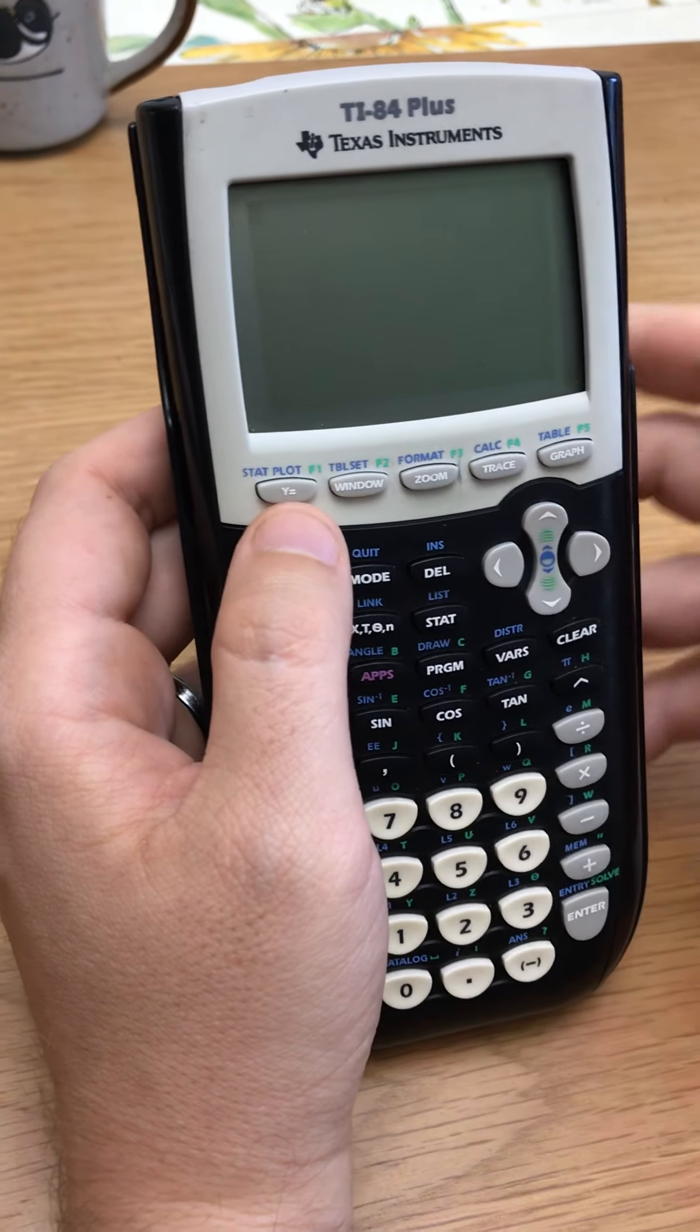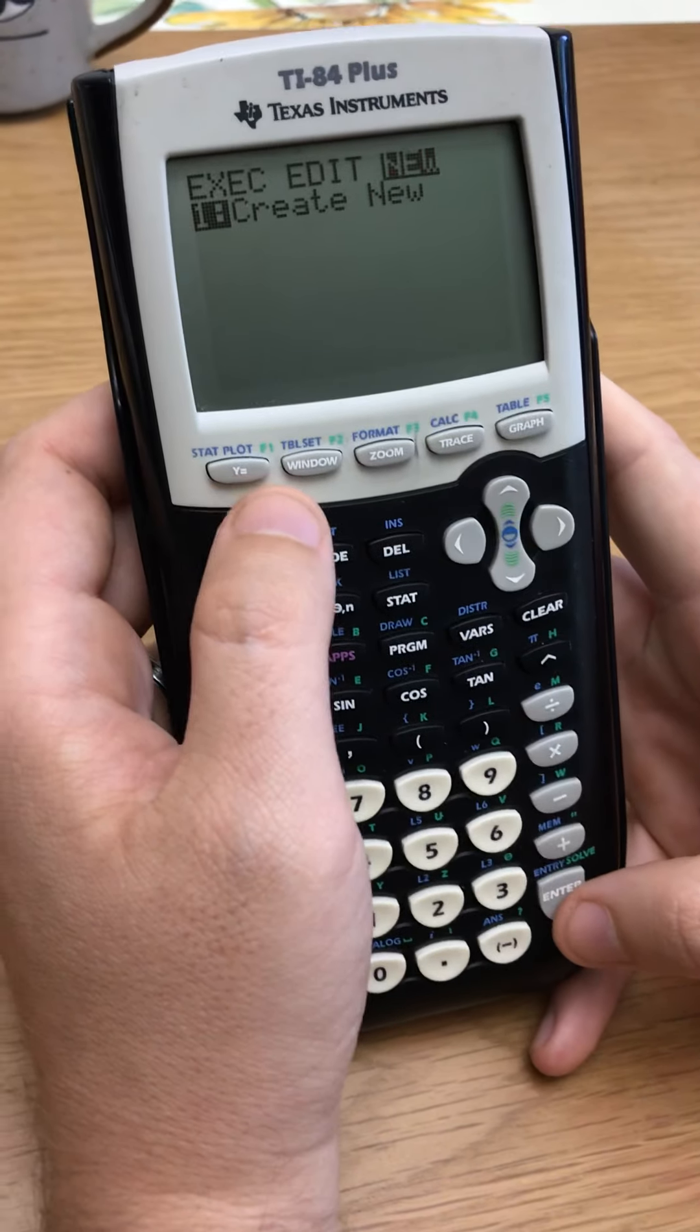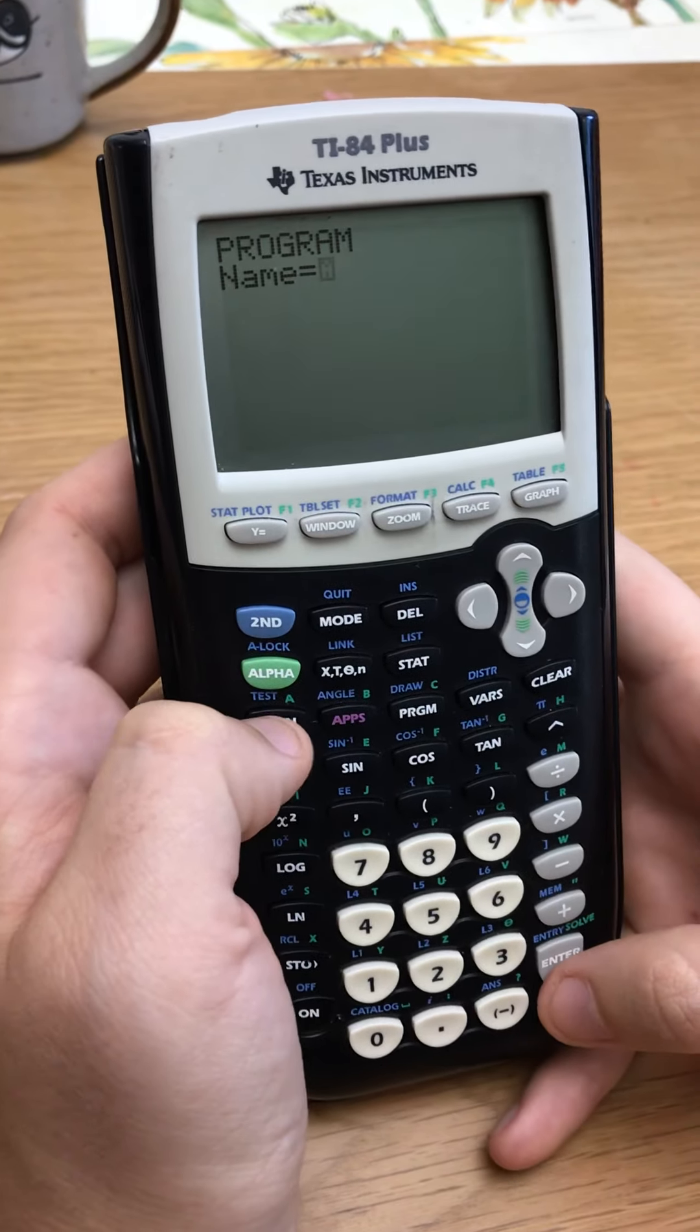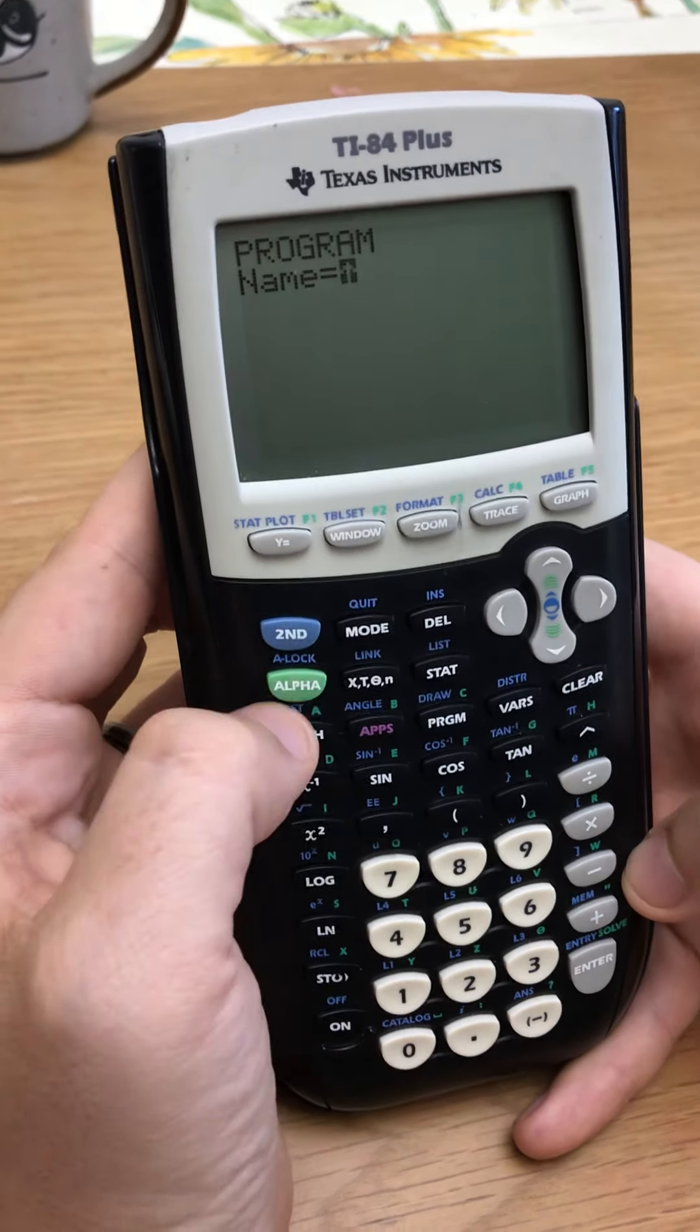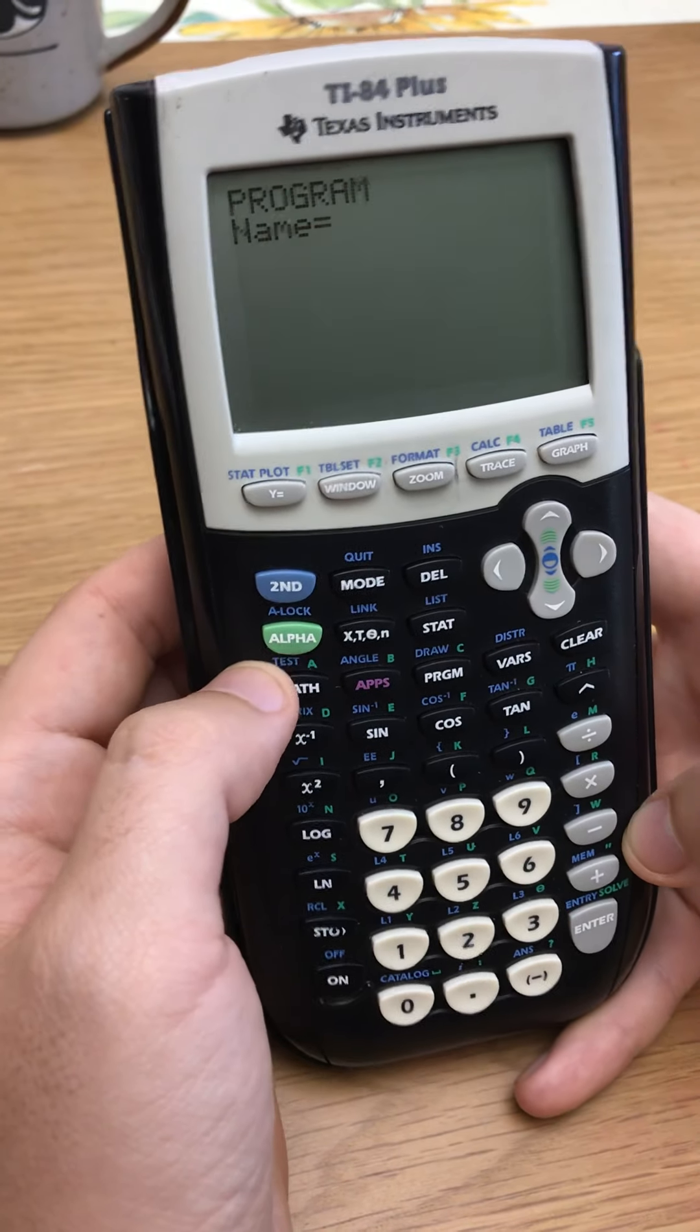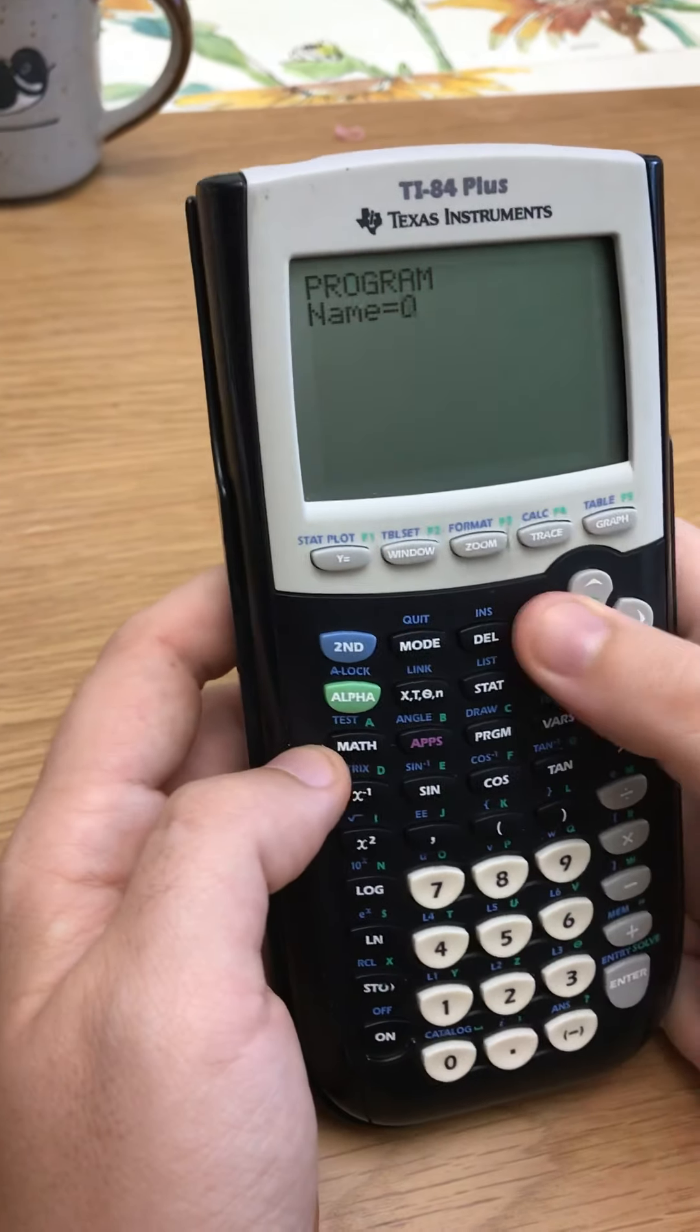So now that I've shown you a couple of my programs, let's show you how to actually build one. So go over to new, right? Program, go over to new, hit enter, and you want to name your program. So obviously if you're going to name it, you probably want to name it something with letters. So you do second, alpha, and that locks the alpha button, so that way every key you press is actually a letter or a nice little theta.